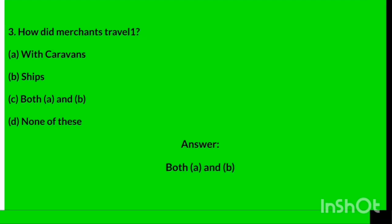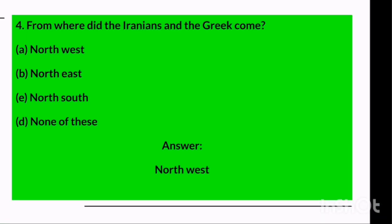Question three: How did the merchants travel? Options are with caravans, ships, both A and B, or none of these. The answer is both A and B — they traveled in caravans as well as ships.